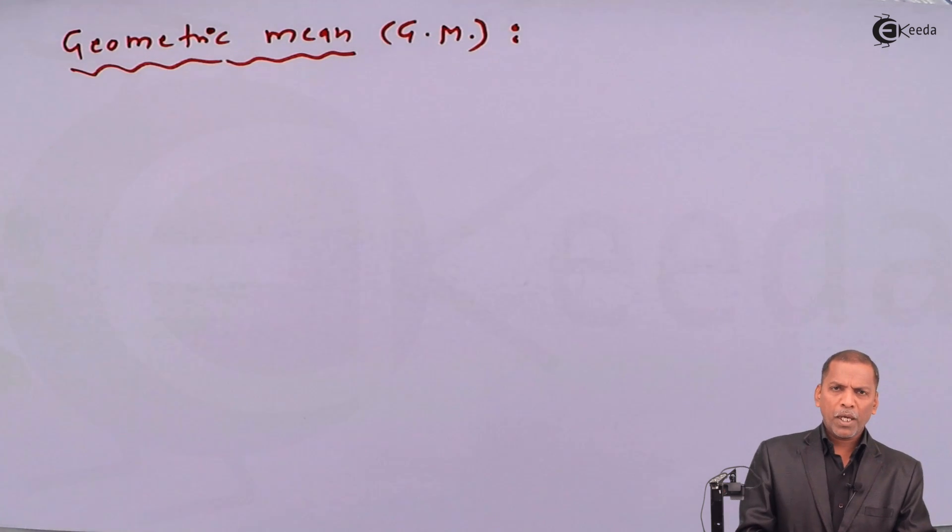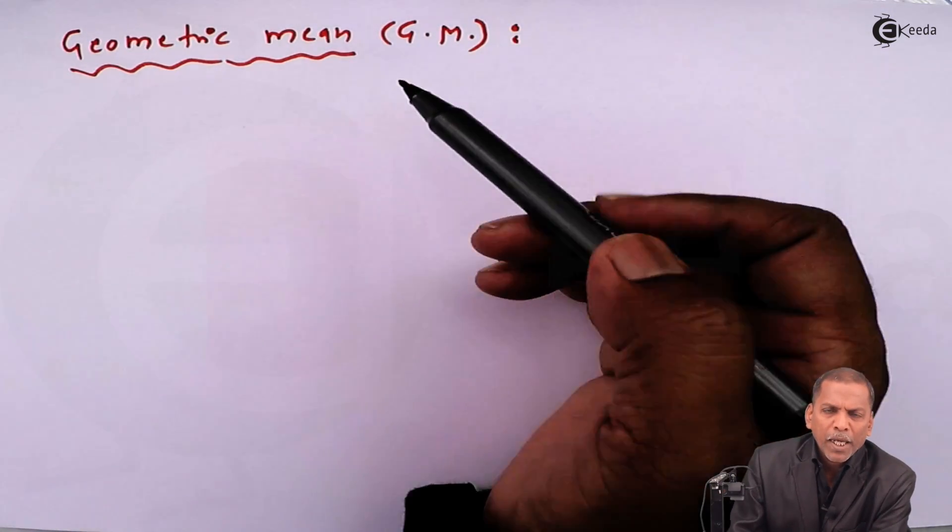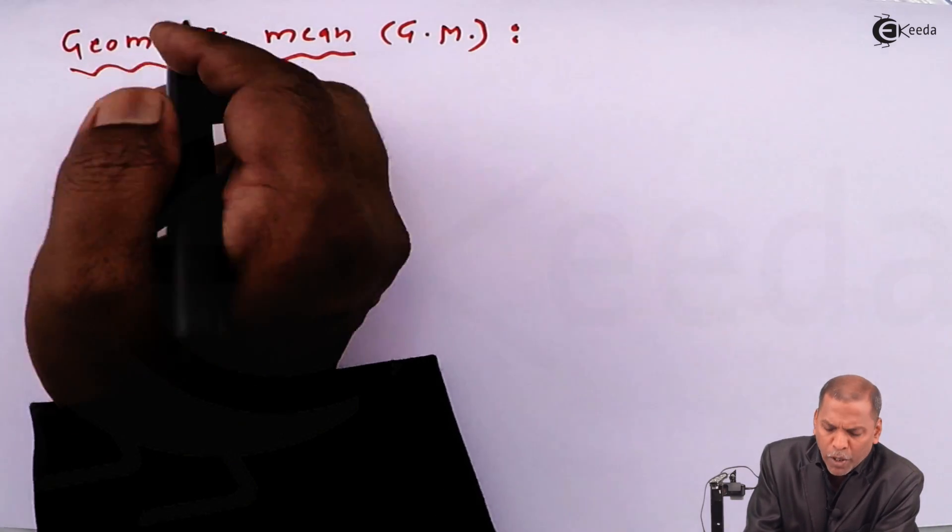Hello friends, now we see the new definition of the term geometric mean from the chapter on sequences and series. The geometric mean is also treated as GM. Now let's see the definition.